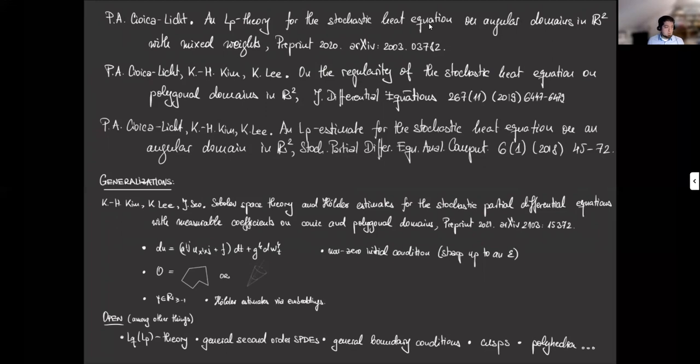Among others, we would like to have, for example, an LQLP theory, meaning that so far, the integrability parameters with respect to randomness, time and space have to be the same. And the techniques we use so far are not that easy to change so that we can choose different integrability parameters. But it is highly desirable to have this and natural.